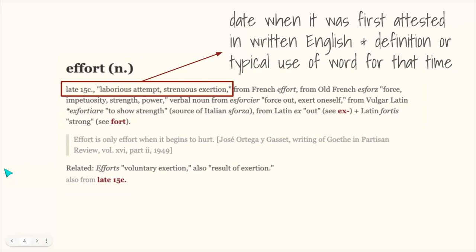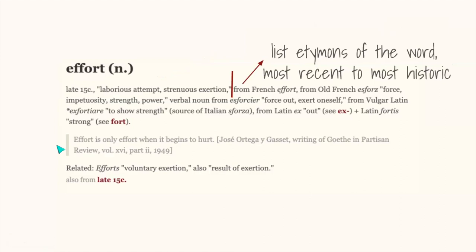The next thing that you're going to see is a date. And this date is when it was first attested or used in written English. Following that, if the word was spelled differently, you will see the original spelling. And you will also see a definition in quotation marks. Now, the definition that you see might not be how we currently see or make use of the word, because of course, words change over time.